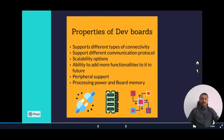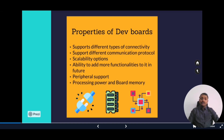The important properties of any IoT development board include different types of connectivity such as Wi-Fi and Bluetooth, and support for communication protocols like I2C and SPI. These are serial communication protocols. The board should also have scalability options to add more features in the future, peripheral support indicating how many ports like USB and HDMI are available, as well as adequate processing power and memory.